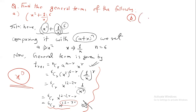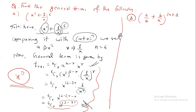The next problem: find the general term of (a/b + b/a) whole power (2n + 1).